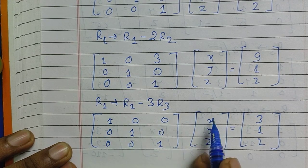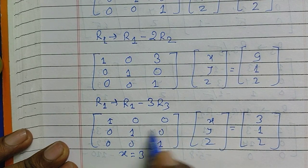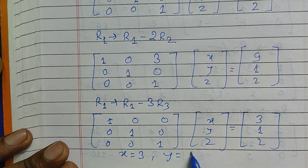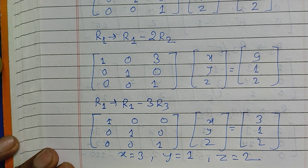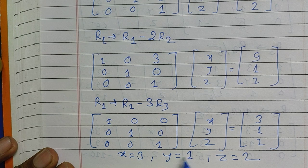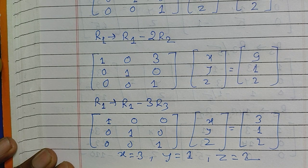Reading off the solution: 1×x equals 3, so x equals 3; y equals 1; and z equals 2. For verification, you can substitute these values of x, y, and z into any of the three original equations. If they satisfy all equations, then your solution is correct and the numerical you solved is right.